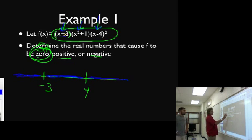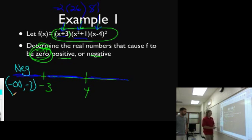Negative five in here makes this negative two. Negative five in here makes this 26. And negative five in here makes this a positive 81. So negative two times this times 81 is still going to be a negative number. So down here, on that interval from negative infinity up to negative three, this thing is going to be negative.